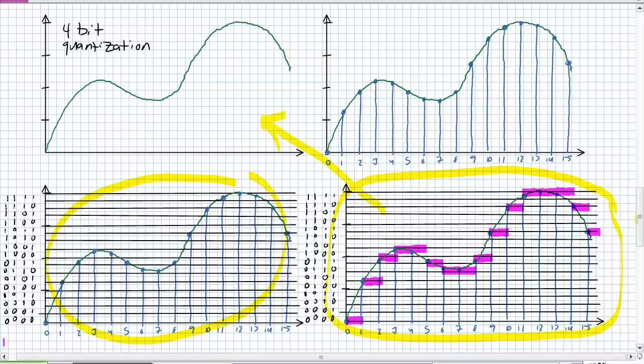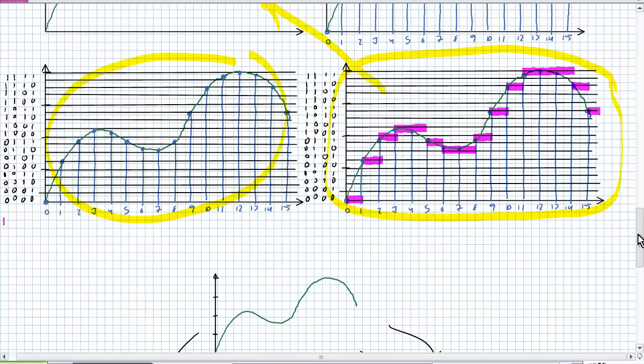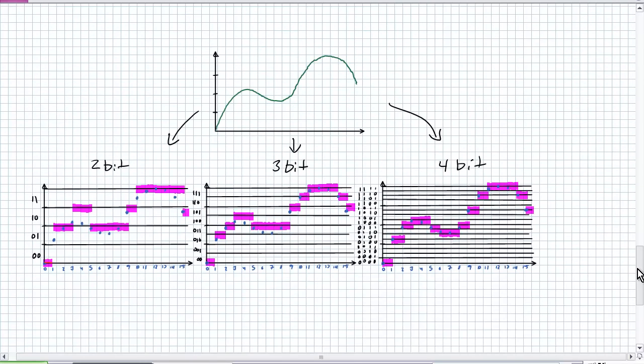And look how closely, how much more accurate our digitized version of this analog waveform looks. It looks a lot more accurate. And basically the summation of this whole thing is here. Here's our original waveform. On the left, we've got our two-bit quantized digital representation, our three-bit, and our four-bit. And you can clearly see the four-bit is a much better representation of our original analog waveform.